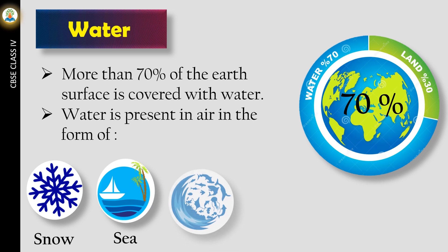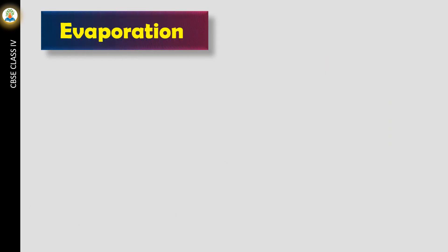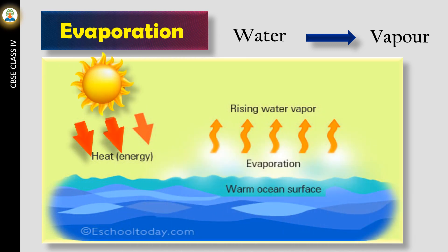The process of changing water into vapor is called evaporation. Due to the heat of the sun, the water of seas, oceans, rivers, and lakes gets heated up and changes into water vapor. When the days are hot, water evaporates from these water sources compared to when the days are cold. Thus, evaporation of water increases the amount of water vapor in the air, thus making the weather more humid.